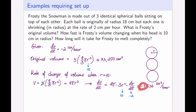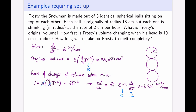How long will it take for Frosty to melt completely? The radius starts at 18 cm and shrinks at 2 cm per hour. In each hour: 18 → 16 → 14 → ... → 0. This requires no calculus — just logical thinking: 18 ÷ 2 = 9 hours.